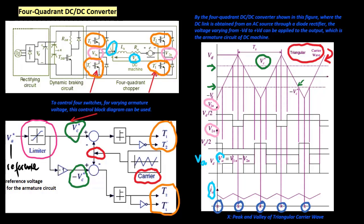The frequency of current ripples in the armature winding is twice the switching frequency, or twice the carrier frequency. Hence, by increasing the switching frequency, the torque ripples and acoustic noise due to the current ripples can be reduced. In particular, if the switching frequency is above 10 kilohertz, then audible noise from the DC machine can be perfectly eliminated.